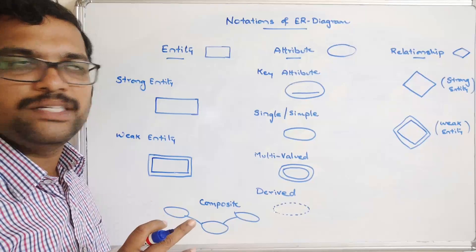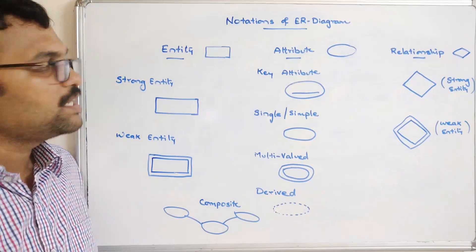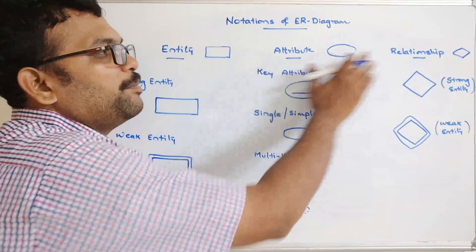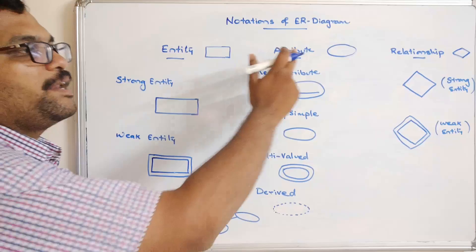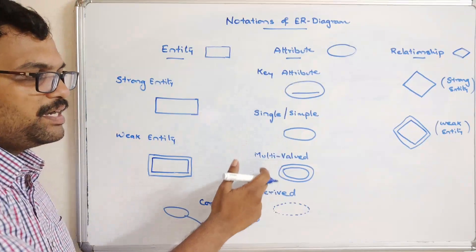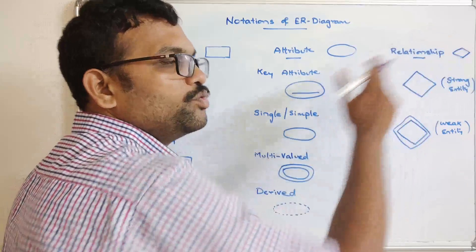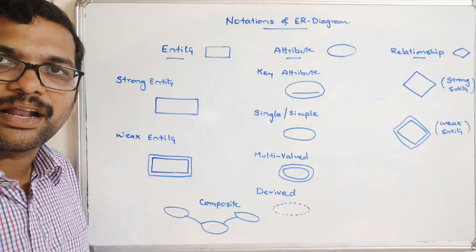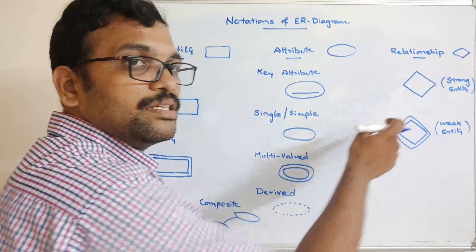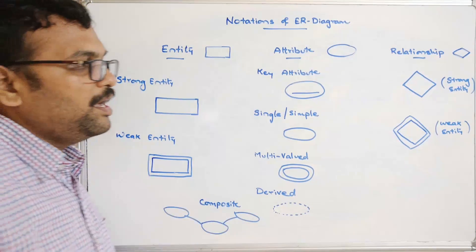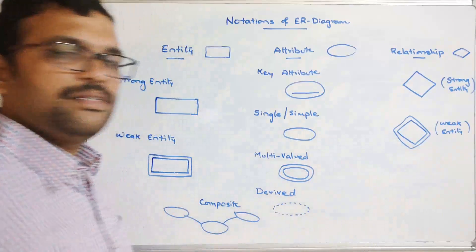These are the notations for the components used in an ER diagram or ER model. The three components are: entity, attribute, and relationship. Entity has strong and weak types; attributes include key, single, multi-value, derived, and composite types. Relationship is represented as a diamond — a normal diamond for strong entities and a double diamond for weak entities.